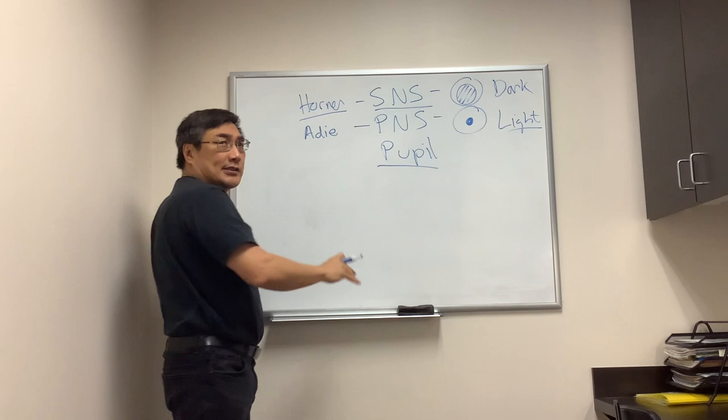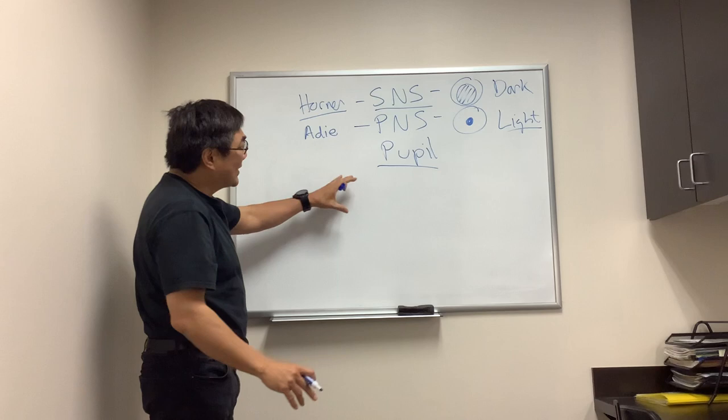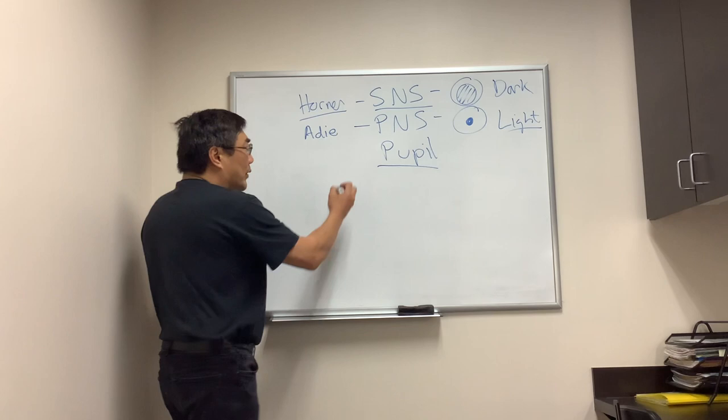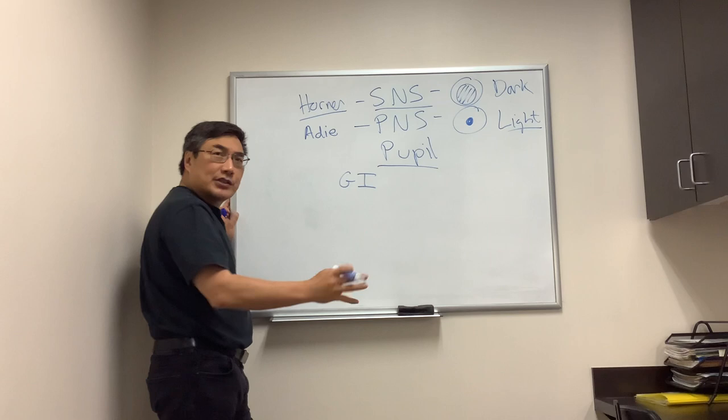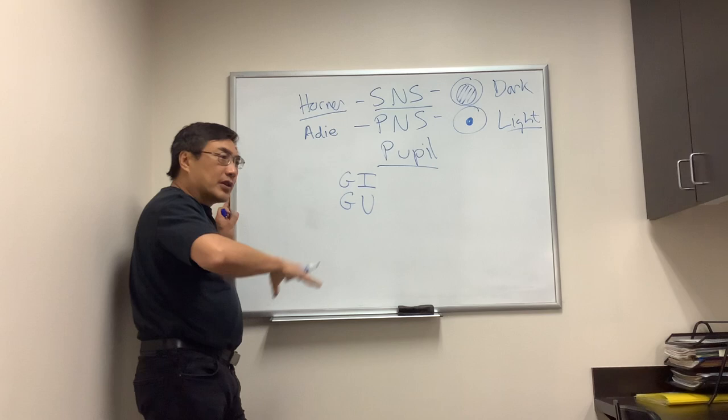When you have the Horner or the Adie's syndrome, you have to ask about the other sympathetic and parasympathetic nervous system findings in the rest of the body. The ones that are most important are the GI system, so they might have diarrhea or constipation. The GU system, they might have sexual dysfunction or genitourinary problems, urinary retention, incontinence.